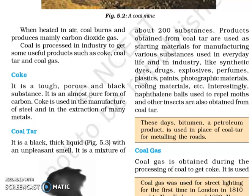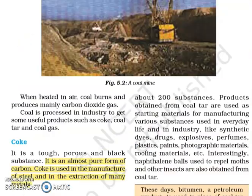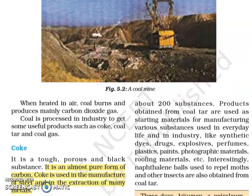Coke is a tough, porous and black substance. It is an almost pure form of carbon and is used in the manufacturing of steel and extraction of many metals. Coal tar is a black and thick liquid with an unpleasant smell. It is a mixture of about 200 substances. Products obtained from coal tar are used as starting materials for manufacturing various substances used in everyday life and in industry — like synthetic dyes, drugs, explosives, perfumes, plastics, paints, photographic materials, roofing materials, etc.